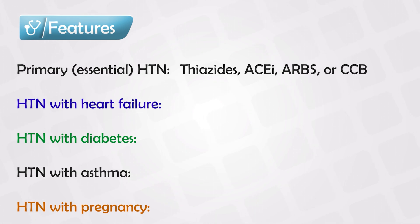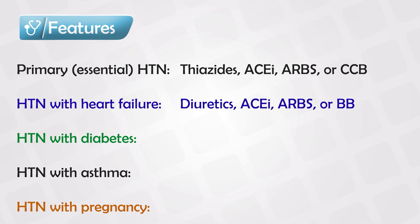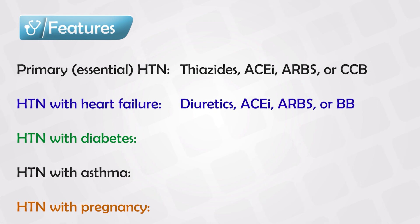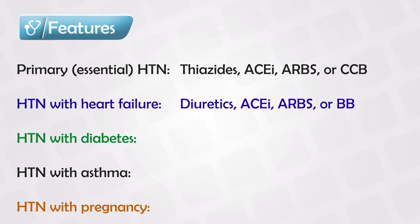If the patient has hypertension with heart failure, we need medications that decrease blood pressure and reduce the load on the heart, either by directly acting on the heart or by decreasing blood volume. First-line agents are diuretics, followed by ACE inhibitors, ARBs, aldosterone antagonists, or beta blockers.